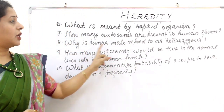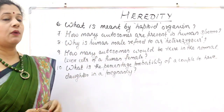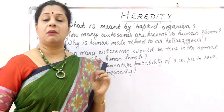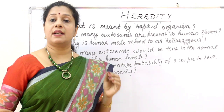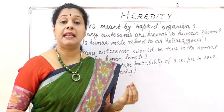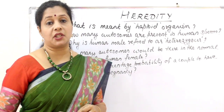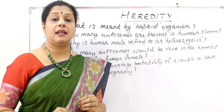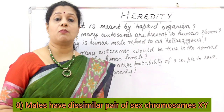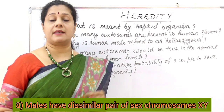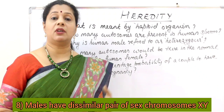Why is the human male referred to as heterozygous? In the human male, the sex chromosomes are dissimilar — one X chromosome and one Y chromosome.